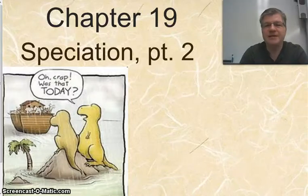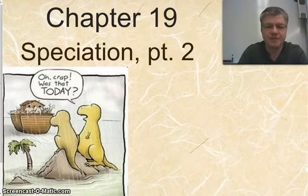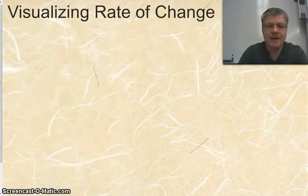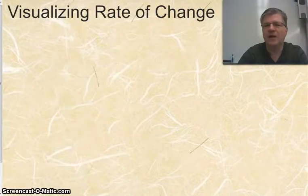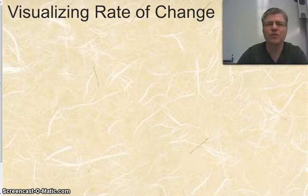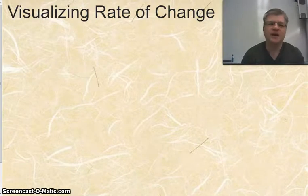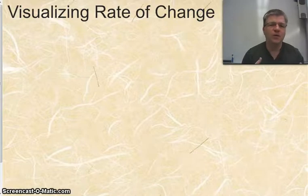We're going to be finishing up chapter 19 today, the second half of our chapter on speciation. We're going to start by talking about how we visualize the rate at which species have evolved and changed, and whether this is a steady, ongoing process or if things happen in quick bursts.